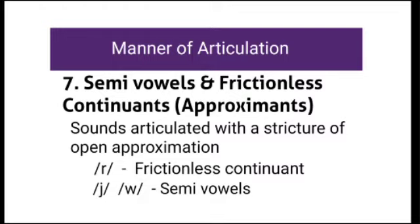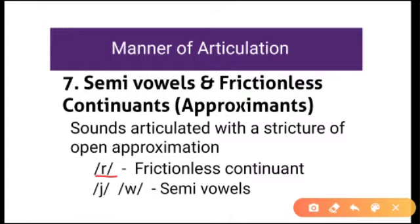So this is how approximants are articulated — with a structure of open approximation. The example of frictionless continuant is R. Here the articulators are brought somewhat close, but there is enough space for air to escape. The articulators do not make contact, and air escapes through that gap. So it is called frictionless continuant.